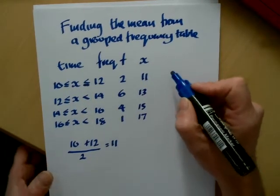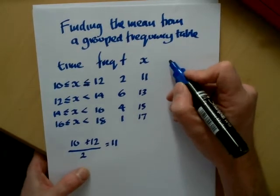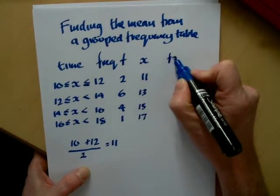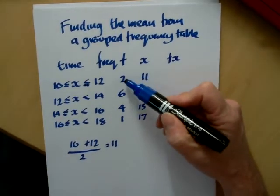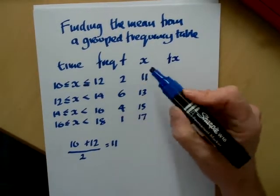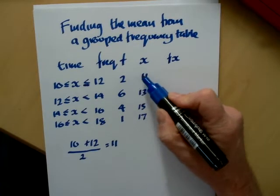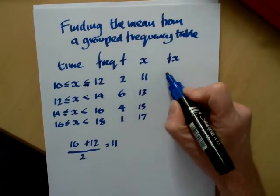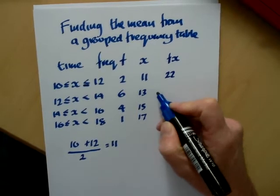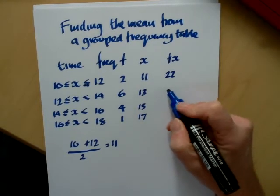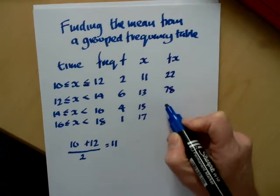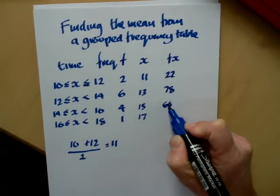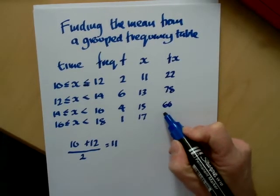Now our problem is really like previous frequency tables. We need to calculate the total time taken by the two people that ran between 10 and 12 seconds. So we simply do the fx again. Two elevens, twenty-two. Six thirteens, so six tens are 60 and six threes are 18, so that's 78. Four fifteens are 60 and one seventeen is 17.